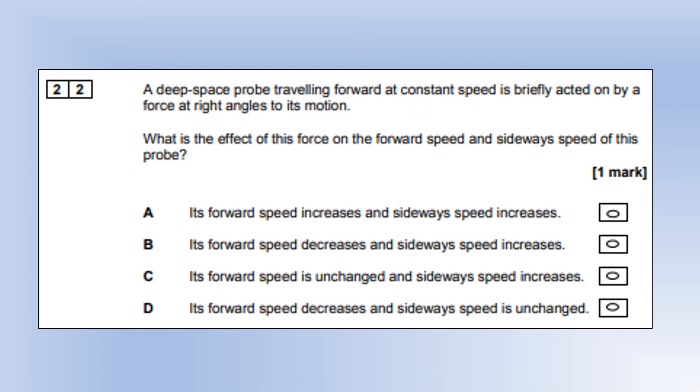A deep space probe traveling forward at constant speed is briefly acted on by a force at right angles to its motion. What is the effect on the forward speed and the sideways speed? If it's at right angles to the forward direction, it's acting sideways. So any answer that says the forward speed changes is wrong. So we know it's option C because if it's at 90 degrees, it can have no effect on the forward speed.